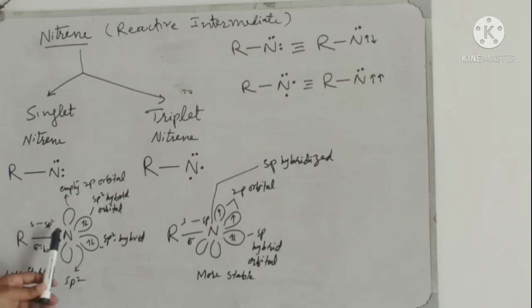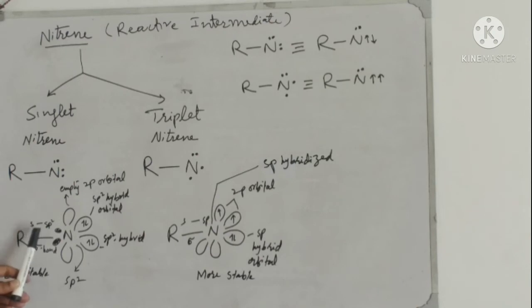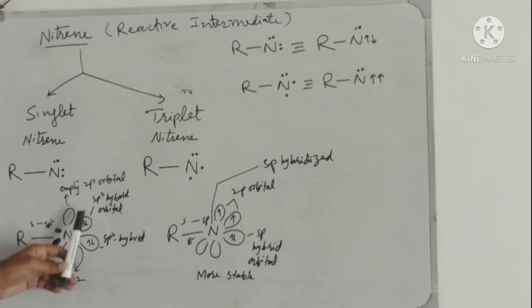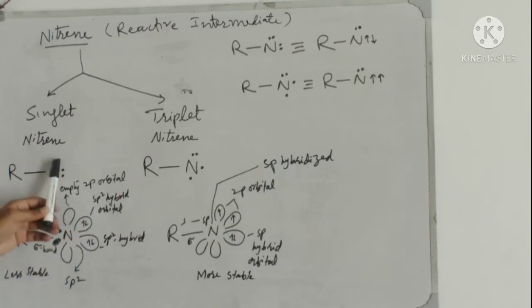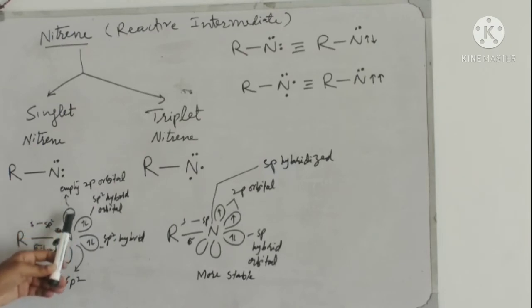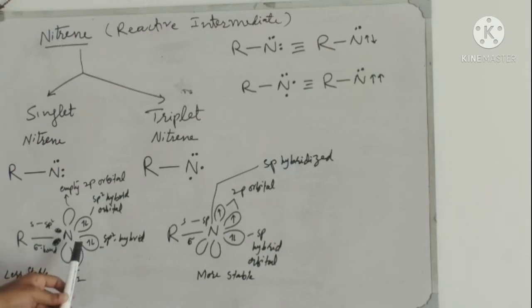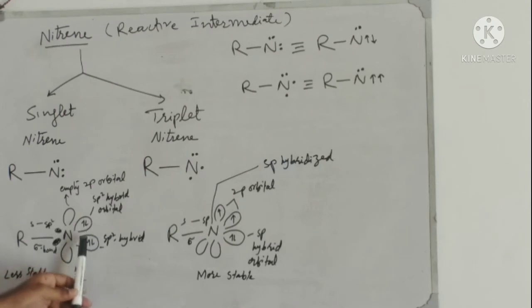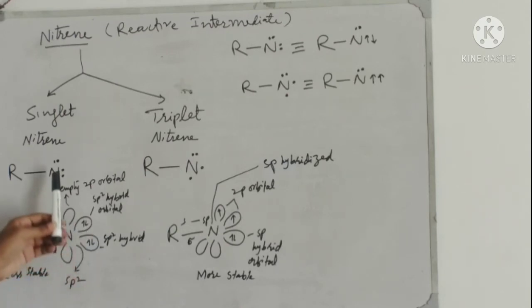This nitrogen will make one sigma bond through sp2 overlap, and this nitrogen has two more sp2 hybrid orbitals. The two lone pairs will occupy these two sp2 hybrid orbitals, and one empty p orbital is present on the nitrogen.